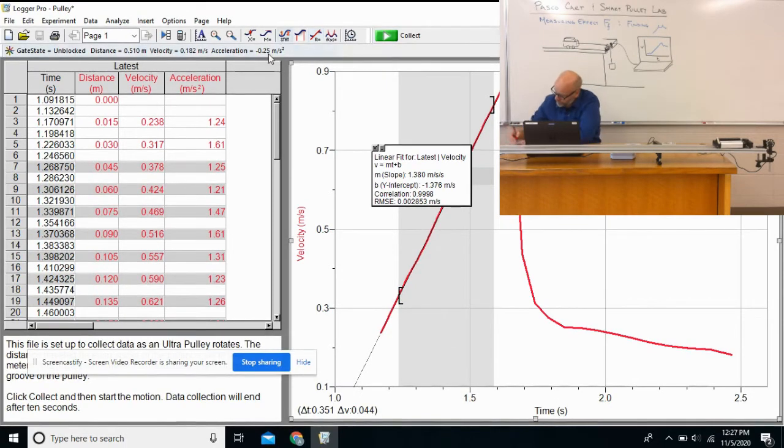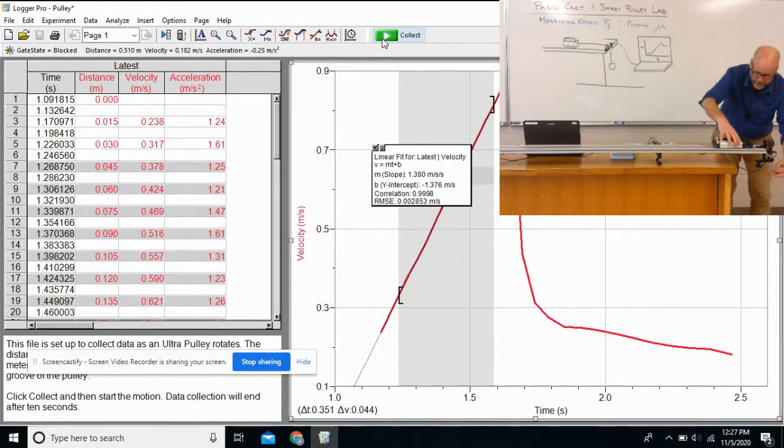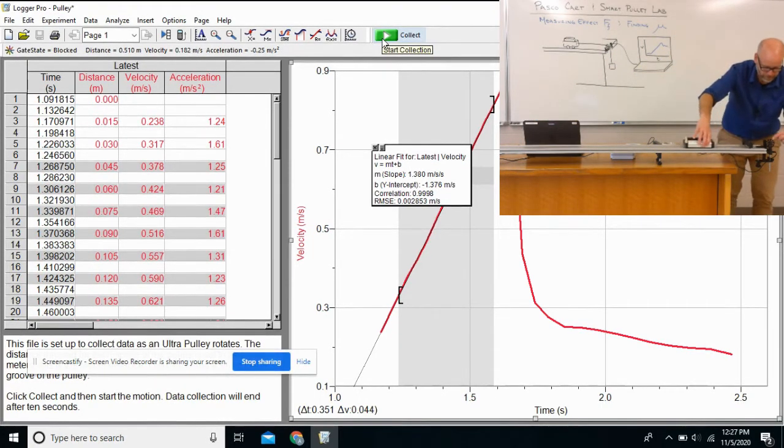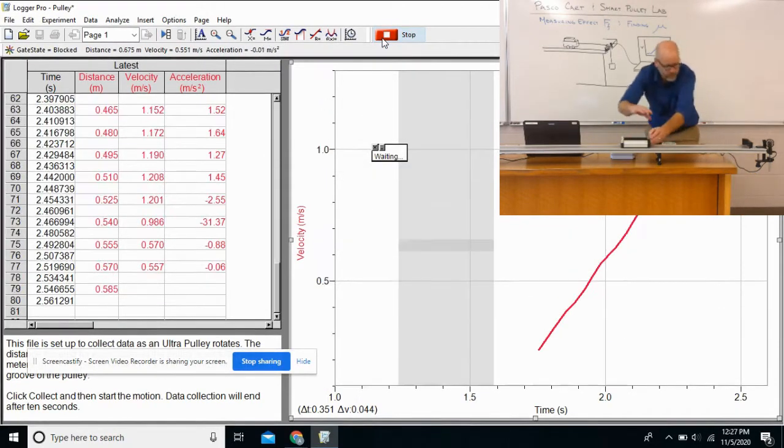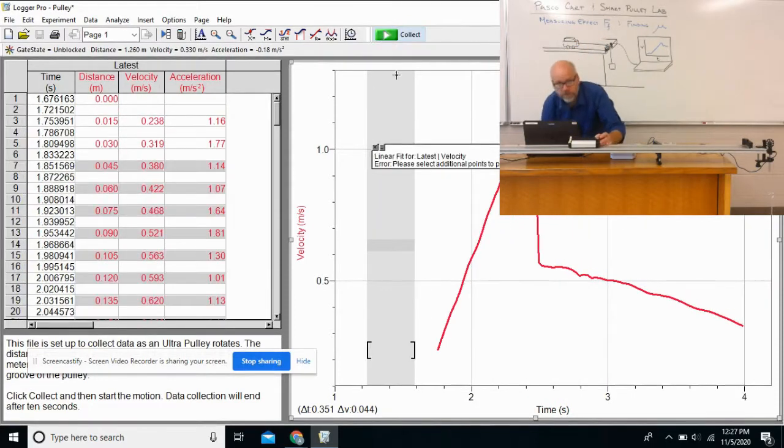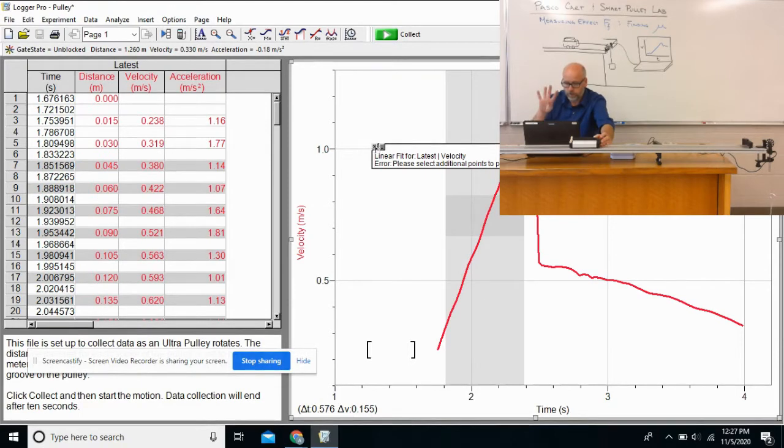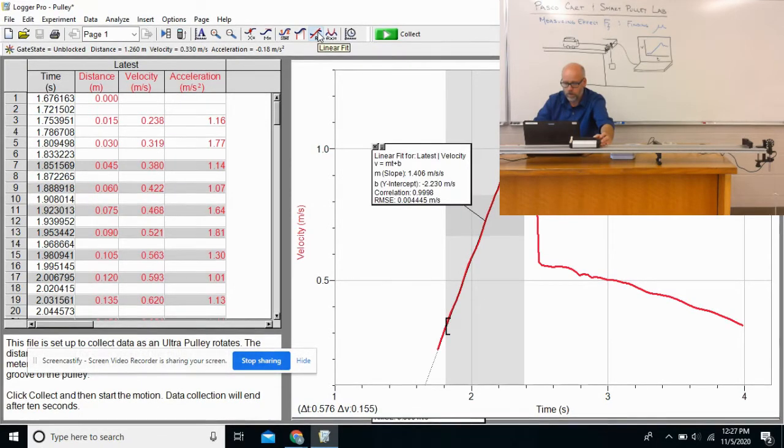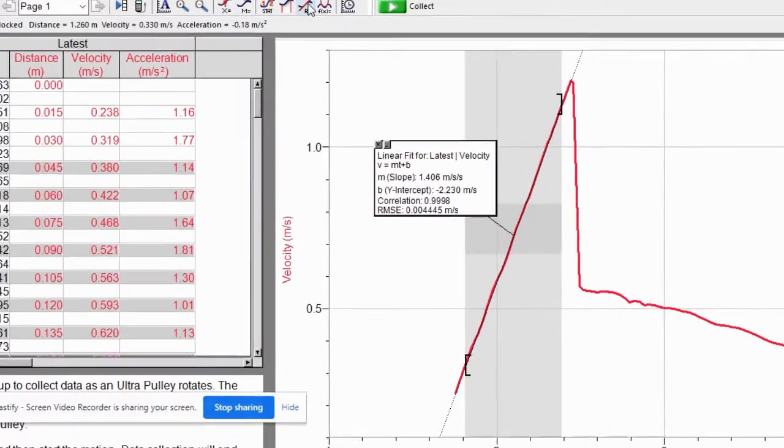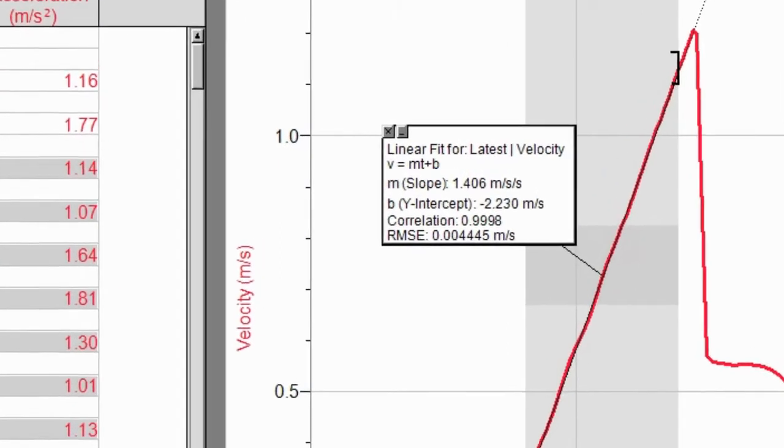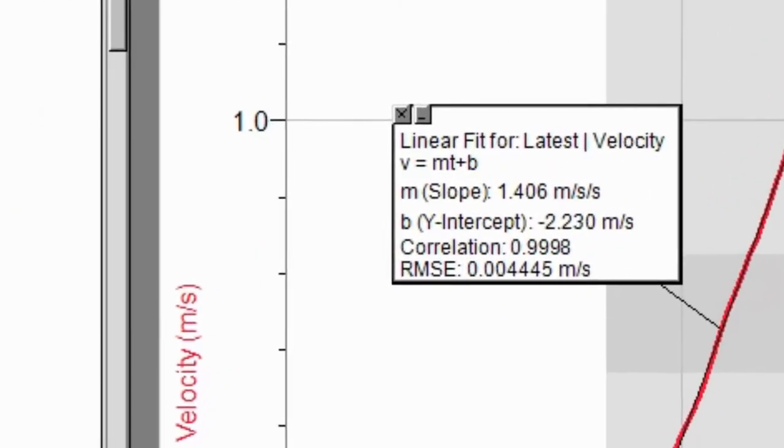Now I know that some of you are thinking, boy, this is tedious. Life is tedious. Sometimes you just have to keep doing things over and over and over again. It won't kill you. That one I released from a little bit farther away. I'm going to highlight this section, do my regression statistic. And even though it was going faster at the end because it traveled more distance, the rate of acceleration was still very similar. 1.406.